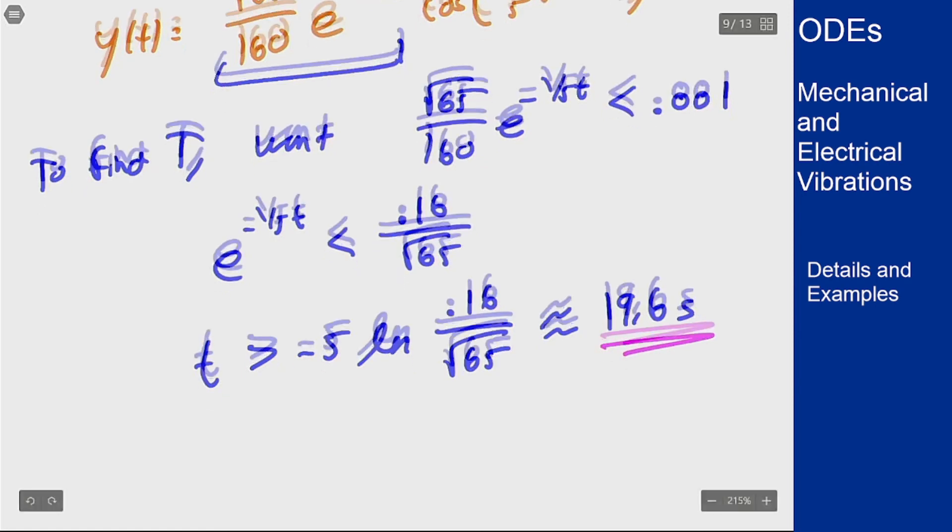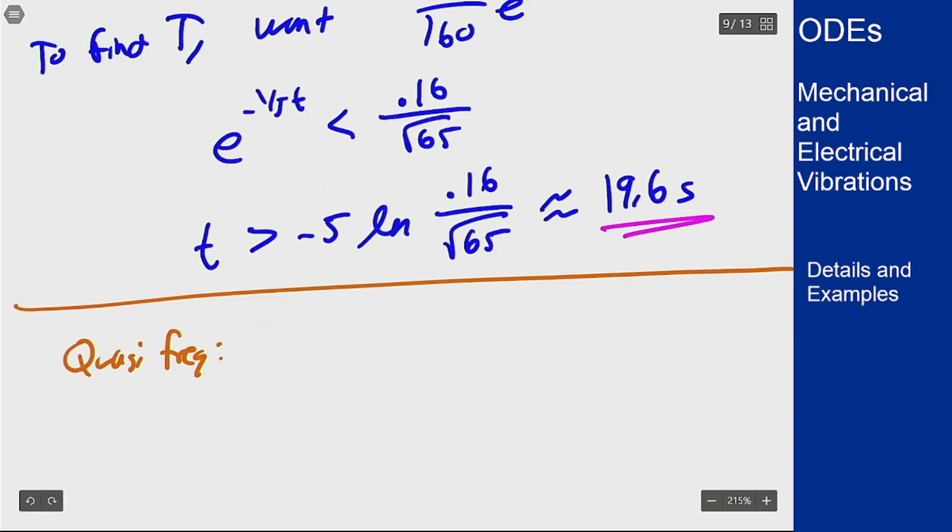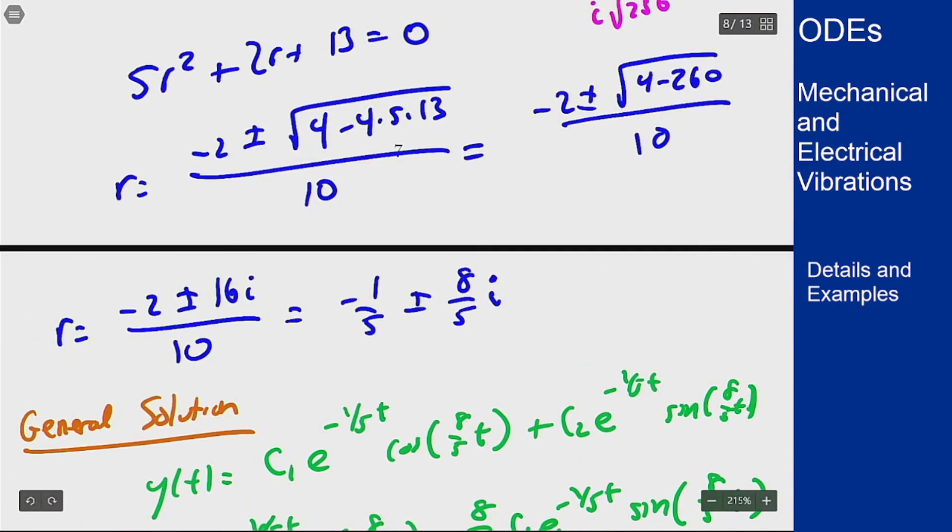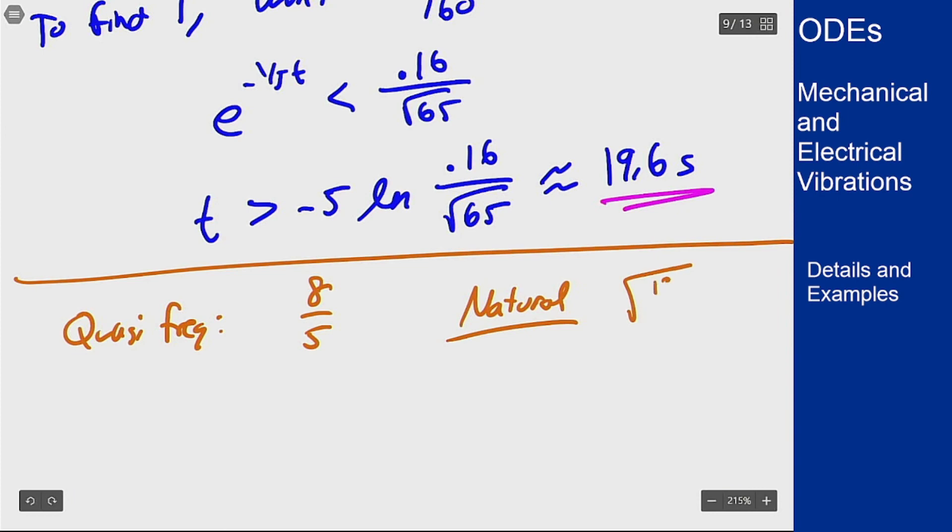One other point I want to make about this while we're in this example is comparing the quasi frequency to the natural frequency. The quasi frequency here was this 8 fifths that we got out of the problem. The natural frequency is what we would get if there was no damping. If there's no damping my equation becomes just 5 r squared plus 13 equals 0. The natural frequency here would be the square root of 13 over 5 which comes out to be around 1.612 and this is 1.6. So the natural frequency is bigger and that's always the case. Based on the way the quasi frequency is defined we know it's always going to be less than the natural frequency.